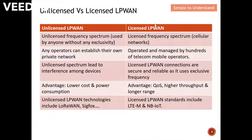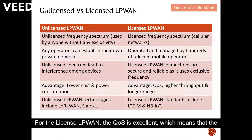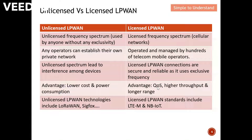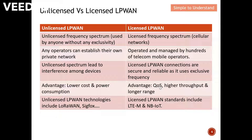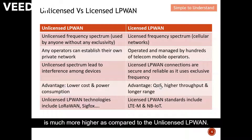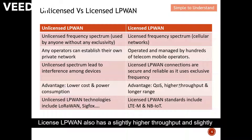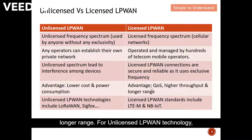For licensed LPWAN, the QoS is excellent, meaning the chances of successfully sending a message to the recipient are much higher compared to unlicensed LPWAN. Licensed LPWAN also has slightly higher throughput and slightly longer range.